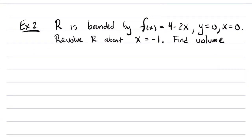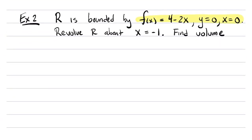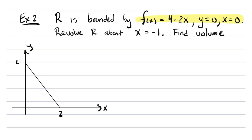Let's look at another example. The region R is bounded by three curves: f(x) equals 4 minus 2x, y equals 0 (the x-axis), and x equals 0 (the y-axis). So let me make a quick hand sketch. Four minus 2x is a line with slope negative two, y-intercept four, and x-intercept two. The region R is this triangular region bounded by those three curves.